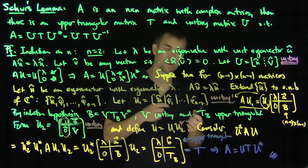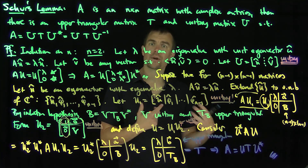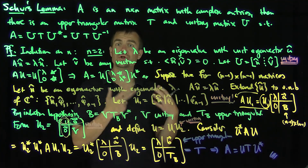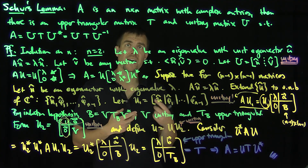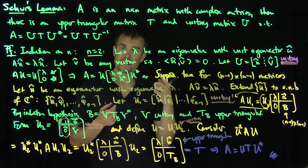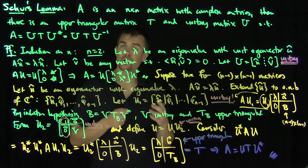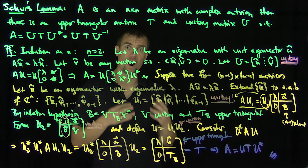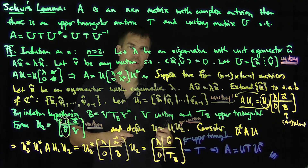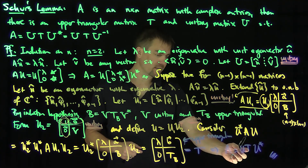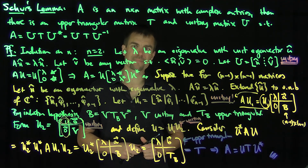So any n-by-n matrix with complex entries can be written as a unitary matrix times an upper triangular matrix times the adjoint of that unitary matrix. This upper triangular factorization holds in full generality, whereas diagonalization only holds when the matrix has distinct eigenvalues with linearly independent eigenvectors. Schur's factorization holds for all matrices, at the expense of an upper triangular matrix in the similarity structure with unitary matrices on either side. Thank you very much.